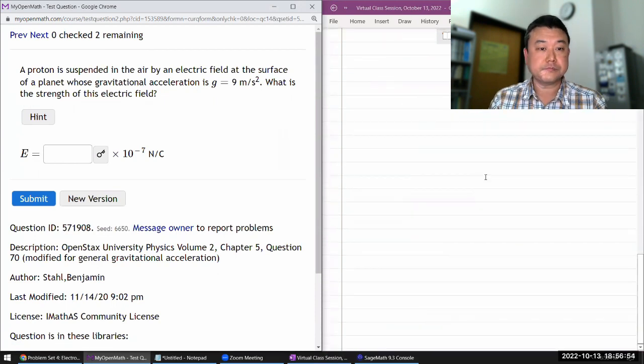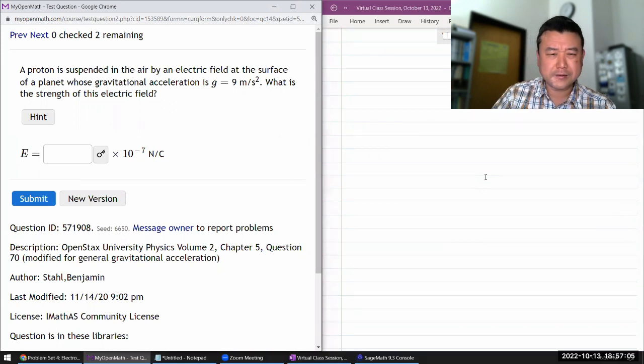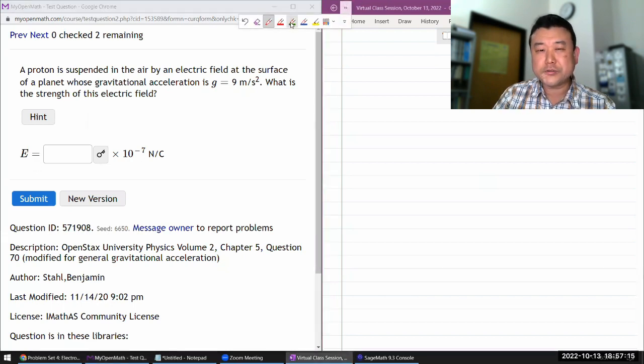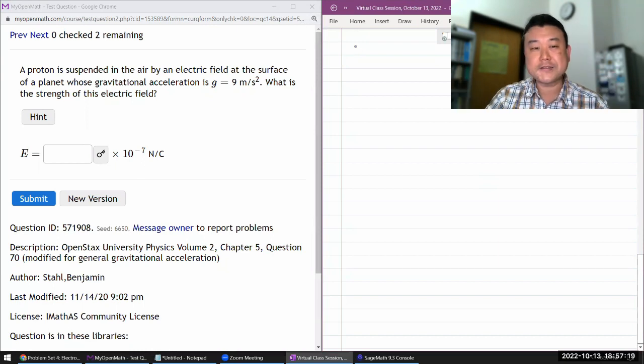So, it says a proton is suspended in the air by an electric field at the surface of a planet whose gravitational acceleration is 9 m/s². What is the strength of this electric field? That feels a lot like the question that we have done, except without all the interesting detail about the Millikan experiment.